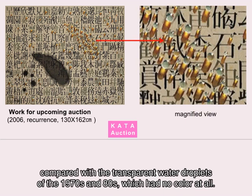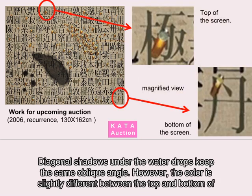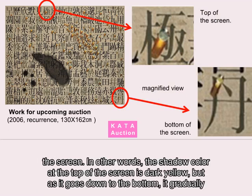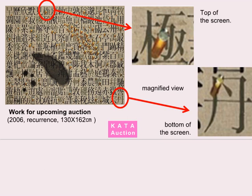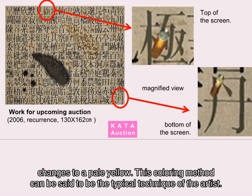These green water droplets are compared with the transparent water droplets of the 1970s and 80s, which had no colour at all. Diagonal shadows under the water drops keep the same oblique angle. However, the colour is slightly different between the top and bottom of the screen — the shadow colour at the top is dark yellow, but as it goes down to the bottom, it gradually changes to a pale yellow. This colouring method can be said to be the typical technique of the artist.